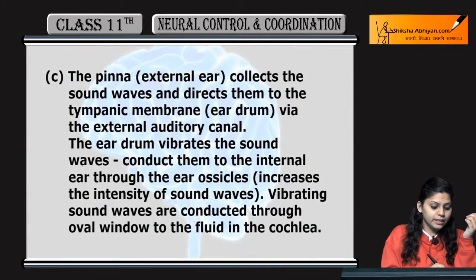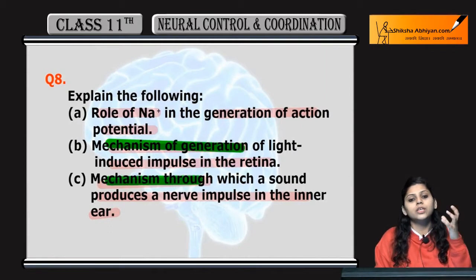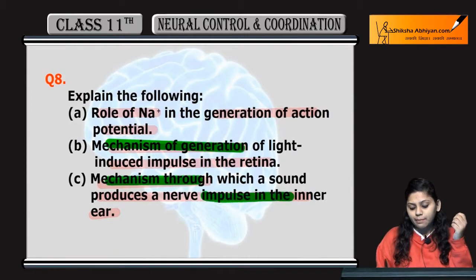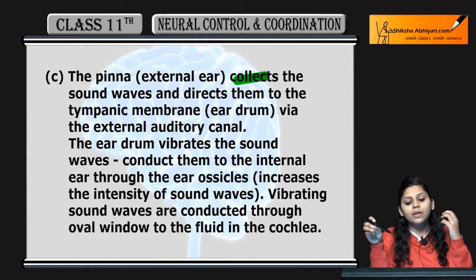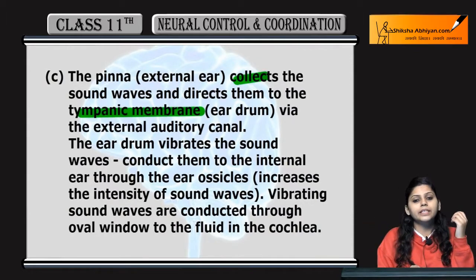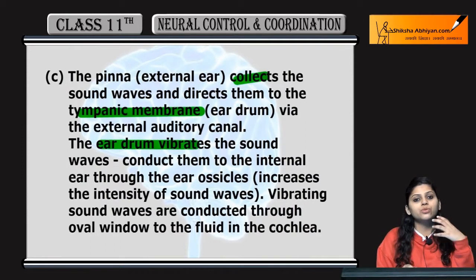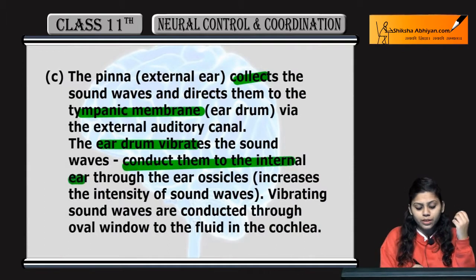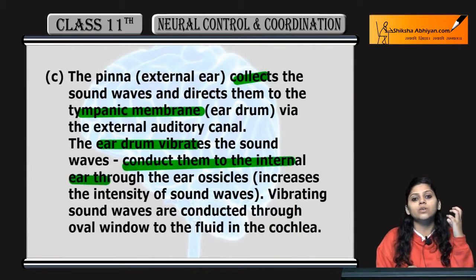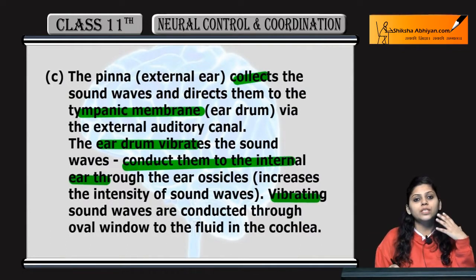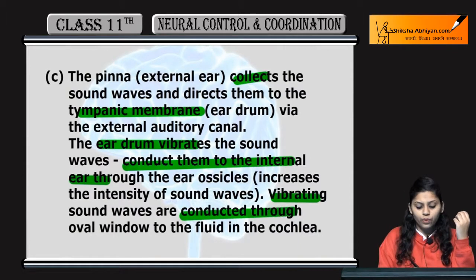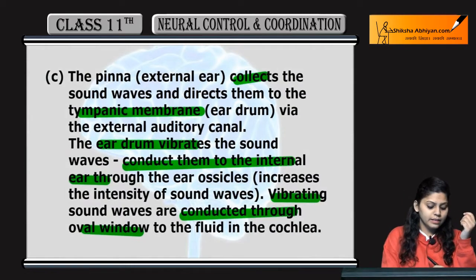The next part is the mechanism through which a sound produces a nerve impulse in the inner ear. The external ear collects sound waves and directs them to the tympanic membrane through the external auditory canal. Vibrations from the sound are then conducted to the internal ear through the ear ossicles — malleus, incus, and stapes — and through the oval window to the fluid in the cochlea.